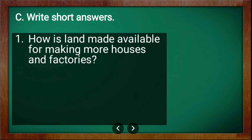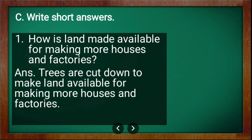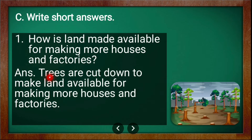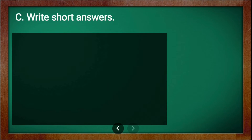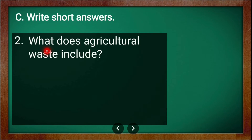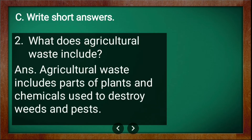Now let us see short answer questions. First: how is land made available for making more houses and factories? Trees are cut down to make land available for making more houses and factories. Is it a good thing? The answer is no, because it is going to affect our environment.